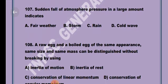Question 8. A raw egg and a boiled egg of the same appearance, same size and same mass can be distinguished without breaking by using Option A, Inertia of motion.